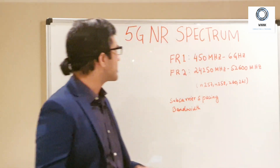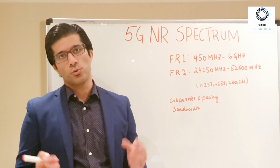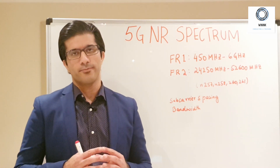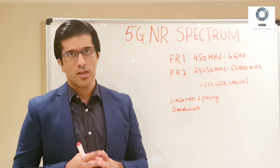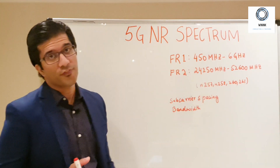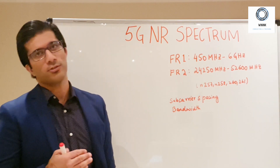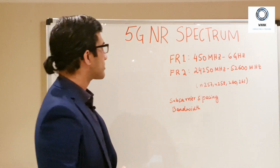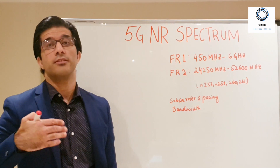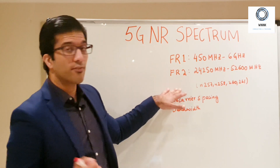In terms of 3GPP specifications, specifically Release 15, there are two frequency regions. One is called FR1 and the other is called FR2. FR1 covers a frequency range from 450 MHz to 6 GHz, so it includes low frequency components and also some higher frequency components. Many commercial 5G deployments have occurred in the 3 GHz band.